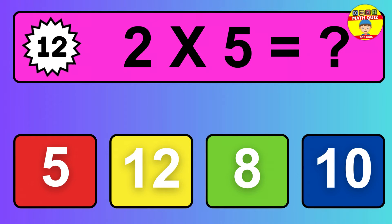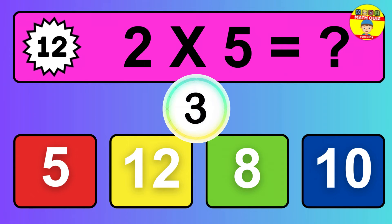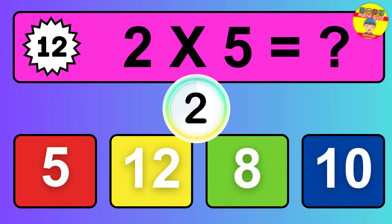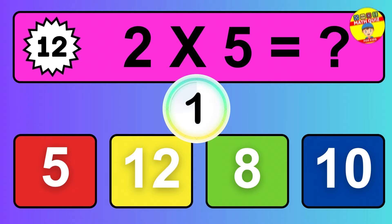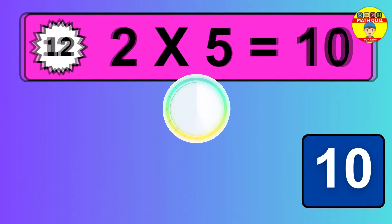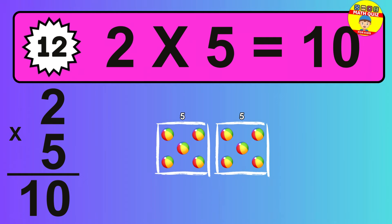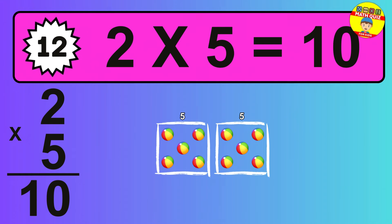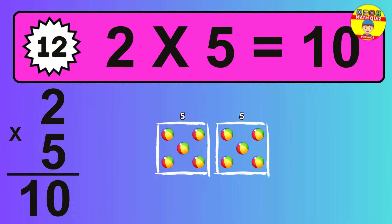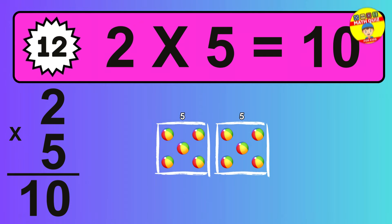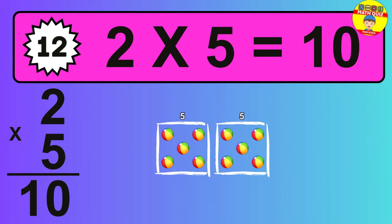Question 12. 2 times 5 equals what? The answer is 2 times 5 is 10. To calculate, we have 2 groups with 5 balls each one. So, how many balls do we have? 10 balls.